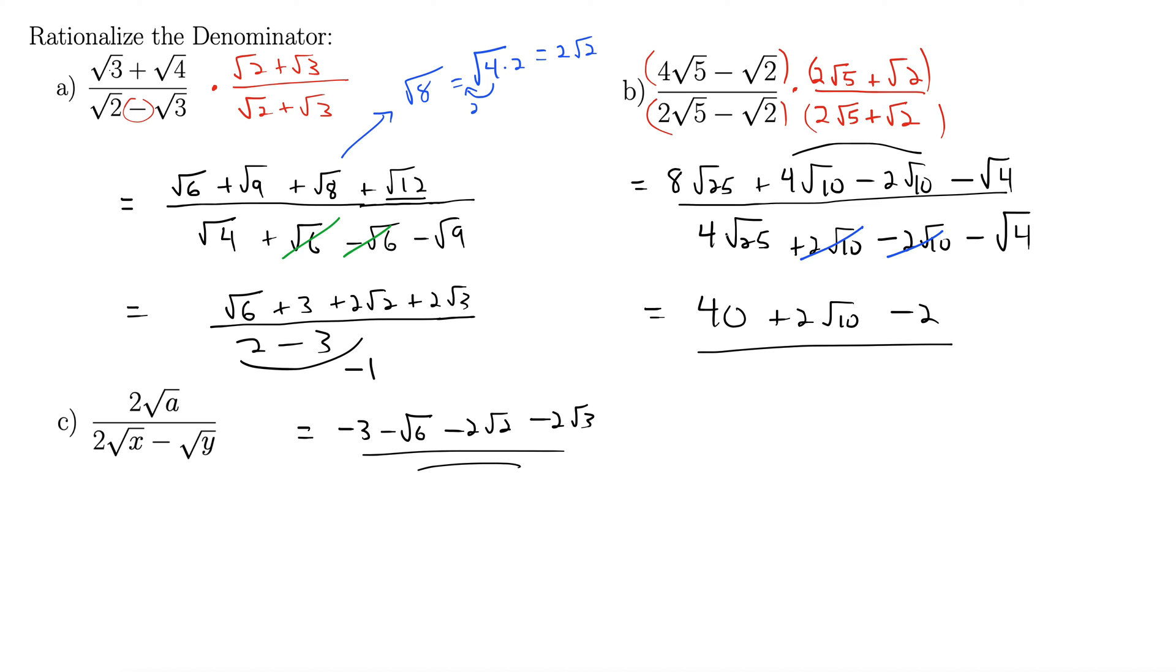All over, rad 25 is 5. Times 4 is 20. Minus rad 4 is minus 2. Simplifying here gives 40 minus 2 is 38 plus 2 rad 10. All over 18 here. 20 minus 2 is 18. Finally, we can factor a 2 out of the numerator. So that's 2 times 19 plus rad 10, all over 18. The 2 and the 18 cancel, leaving a 9 below. So 19 plus rad 10, all over 9. There we go.